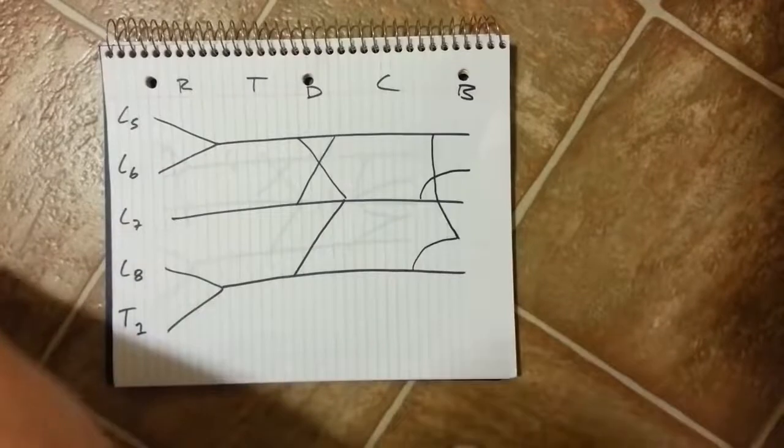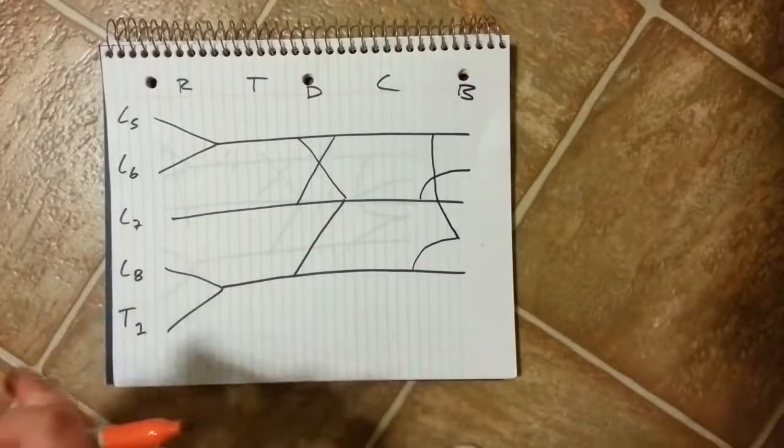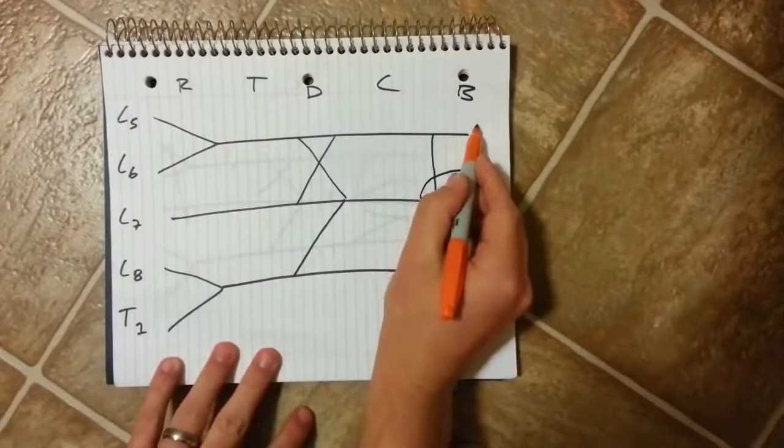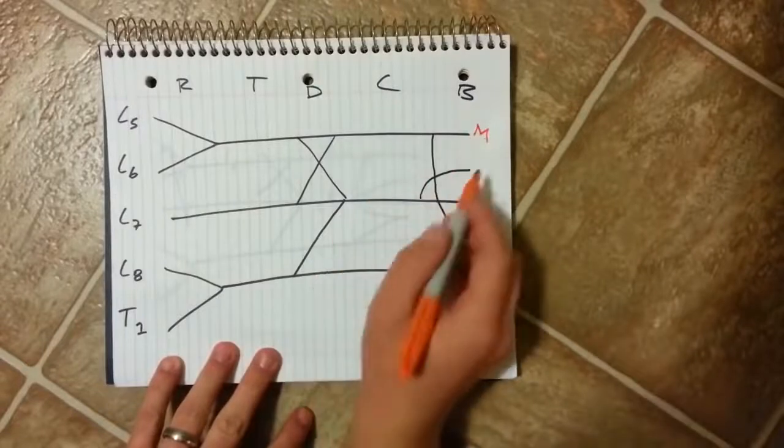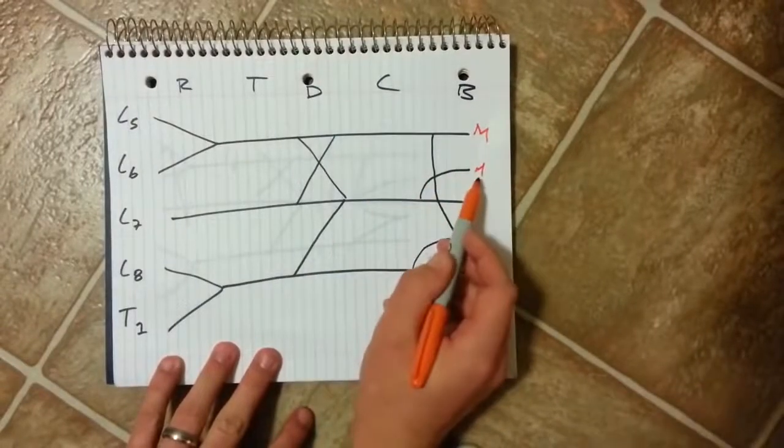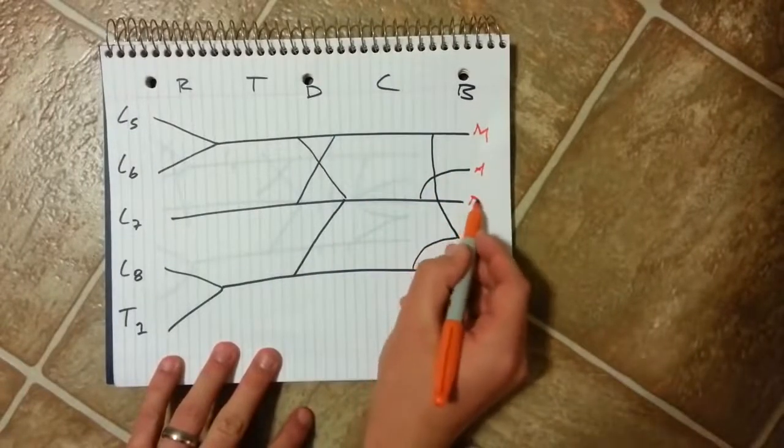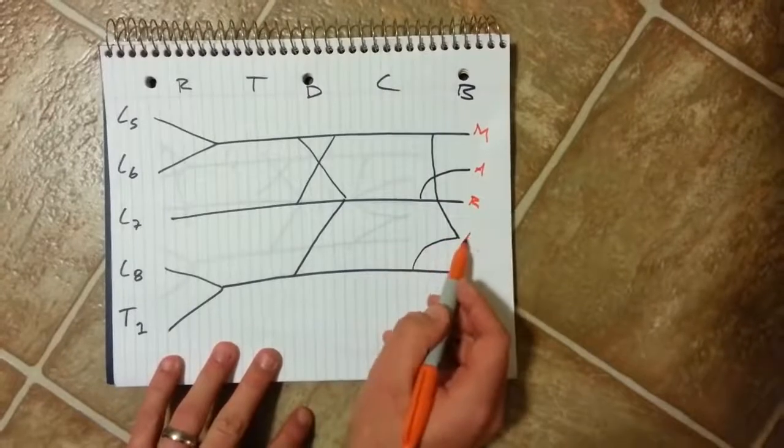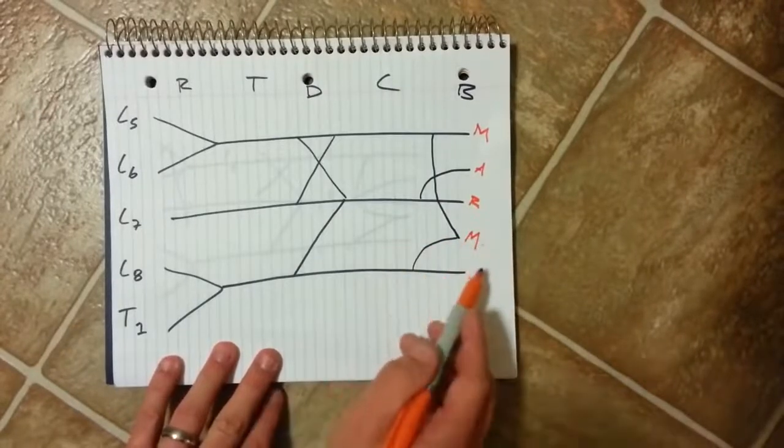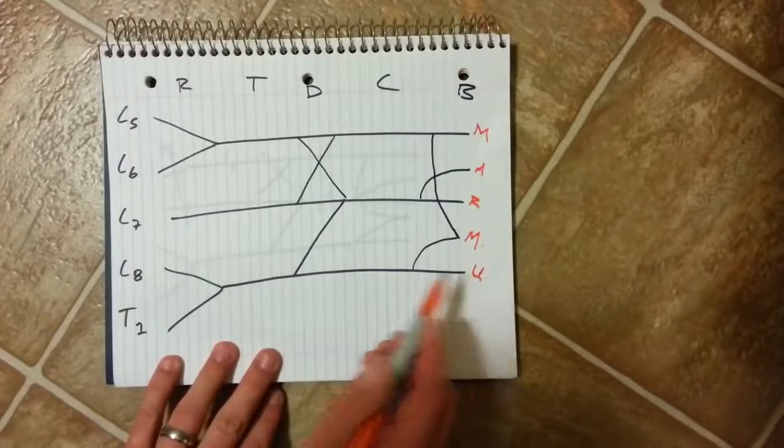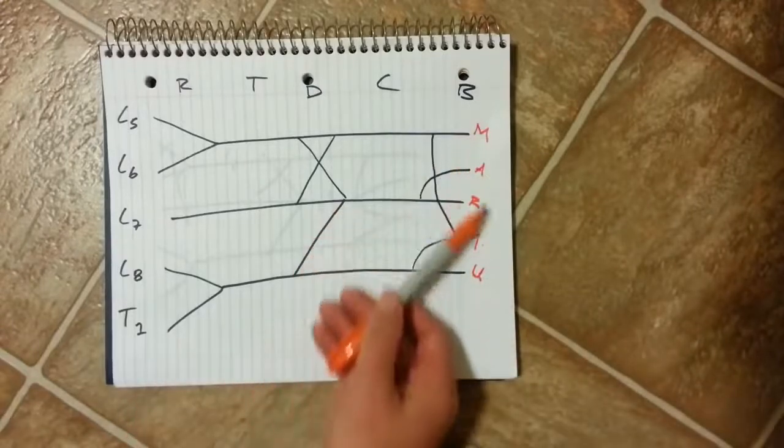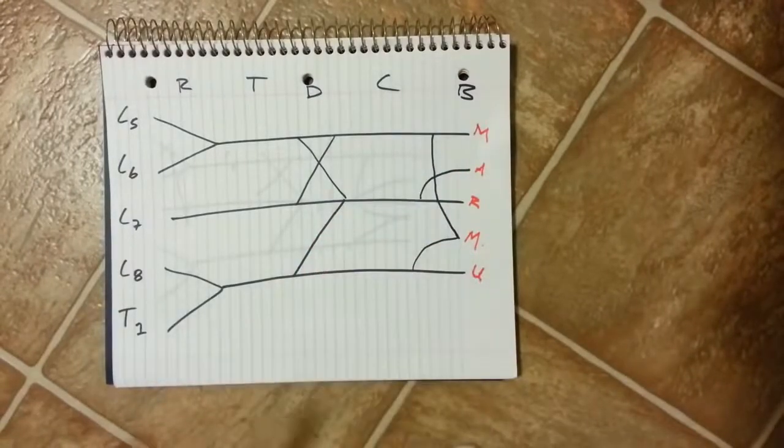Along the right side here I use the acronym MARMU: M which is Musculocutaneous, A which is Axillary, R which is Radial, M which is Median, and U which is Ulnar. And these are those final branches coming off the brachial plexus.